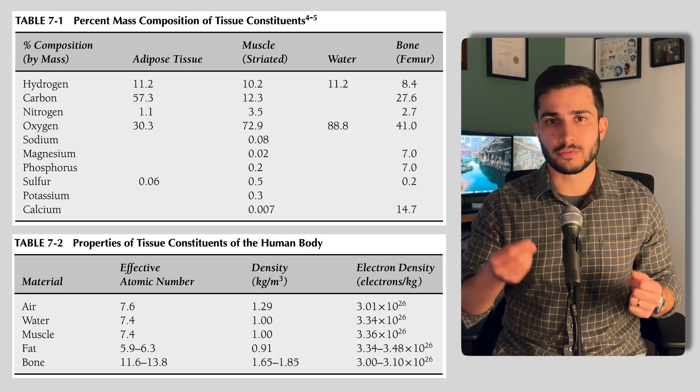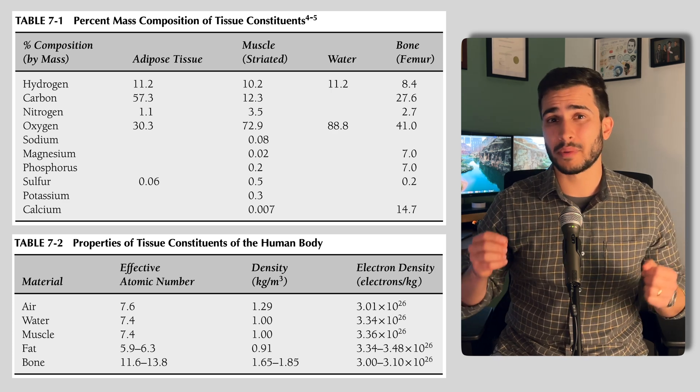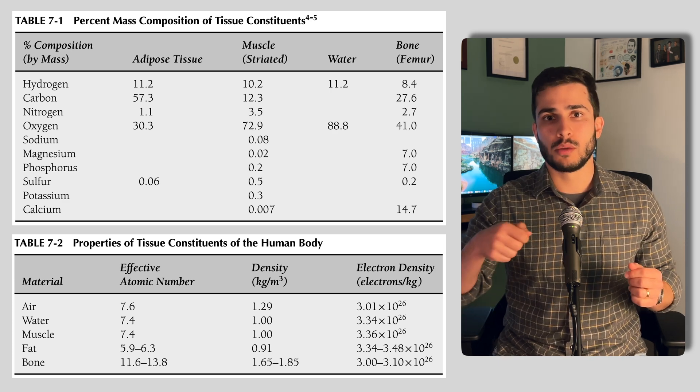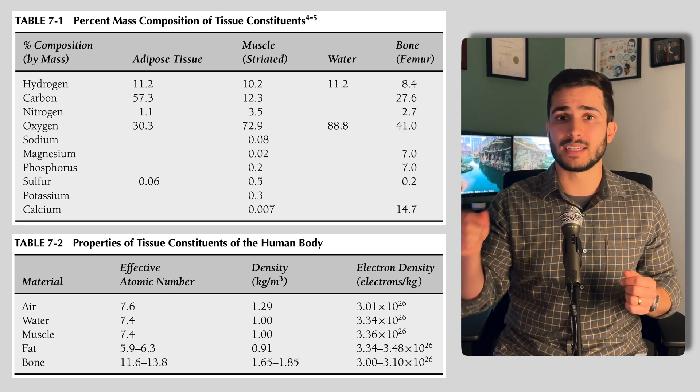Hydrogen, however, is absent from air, because it's made up of oxygen and nitrogen, but it does contribute about 10% of the weight of muscle, which is actually the reason why electron density is greater for muscle than it is for air.